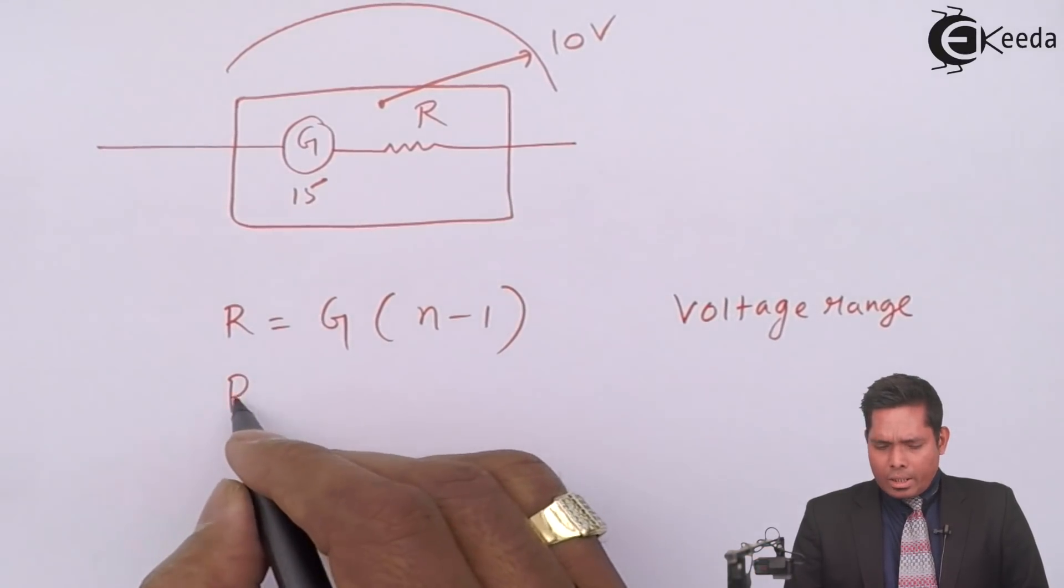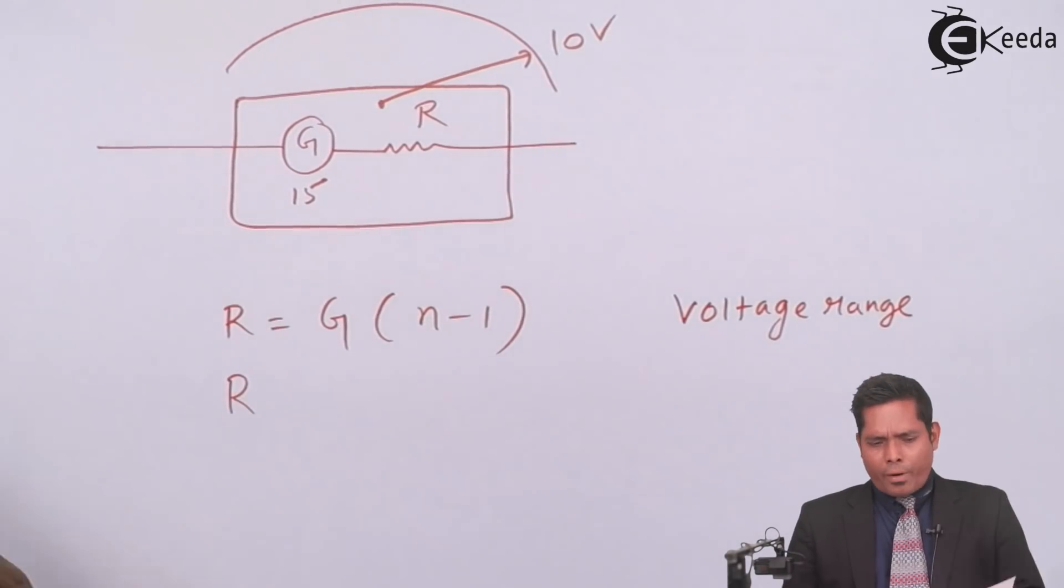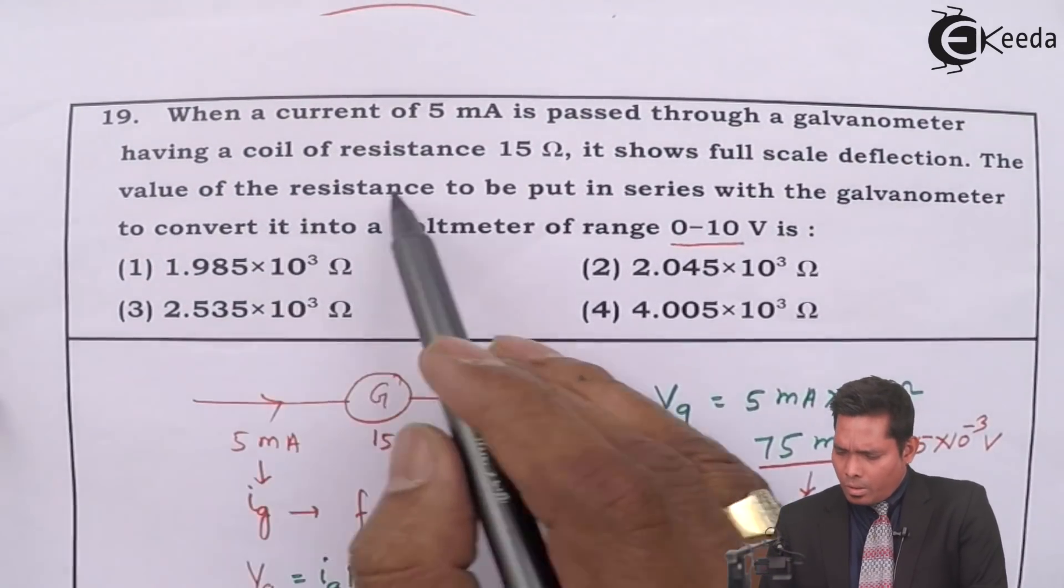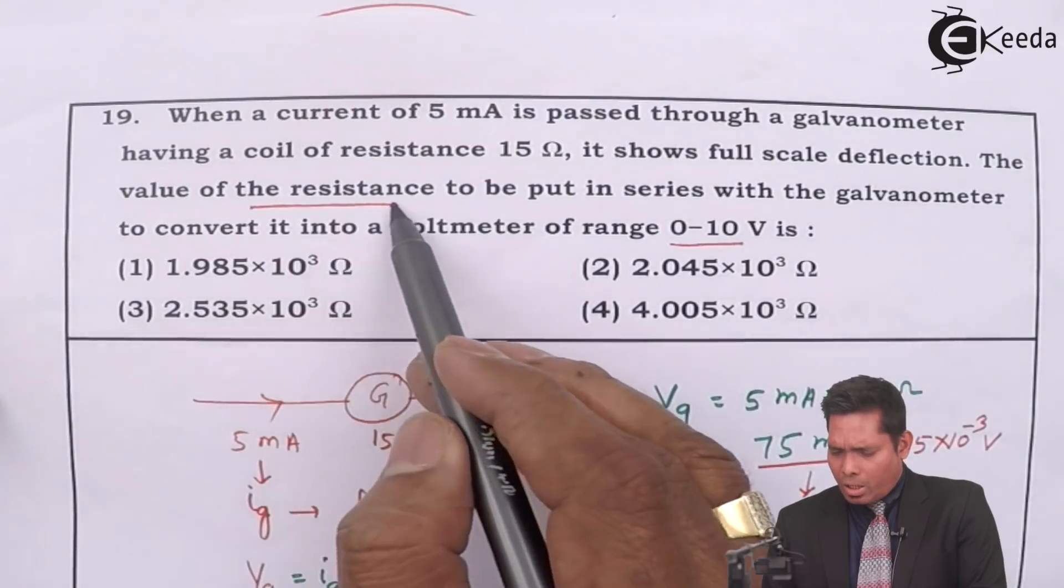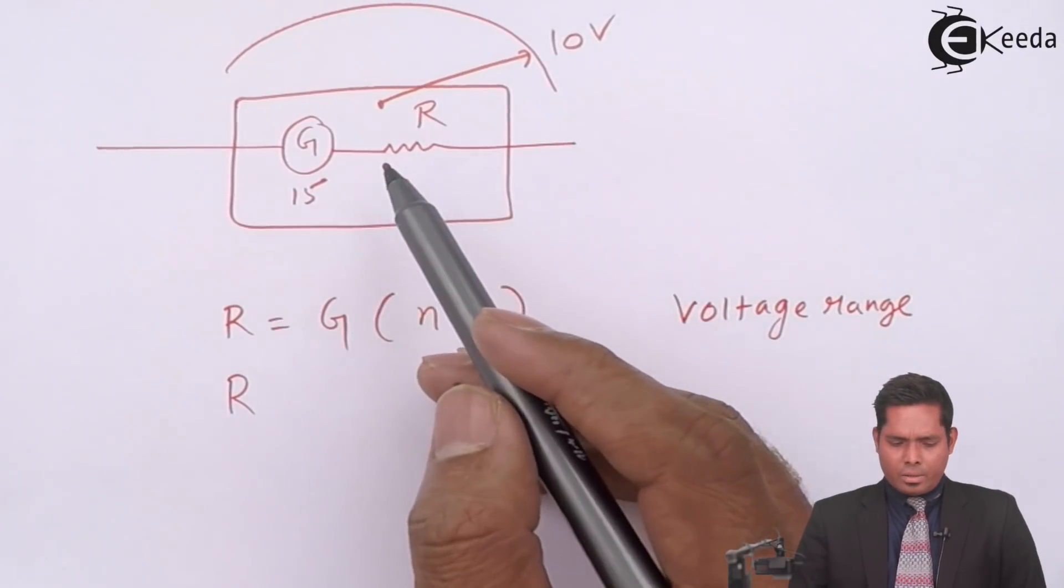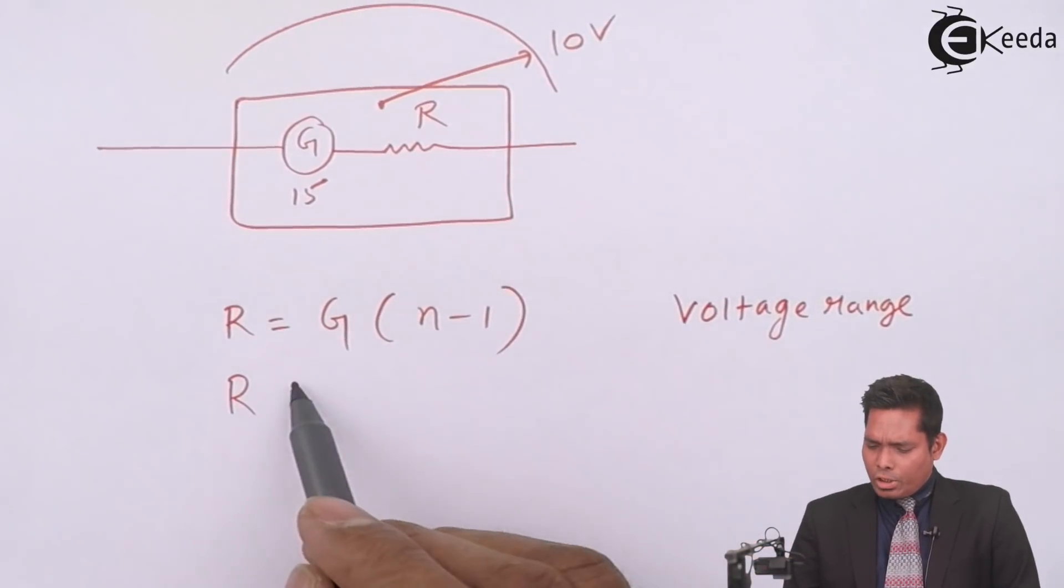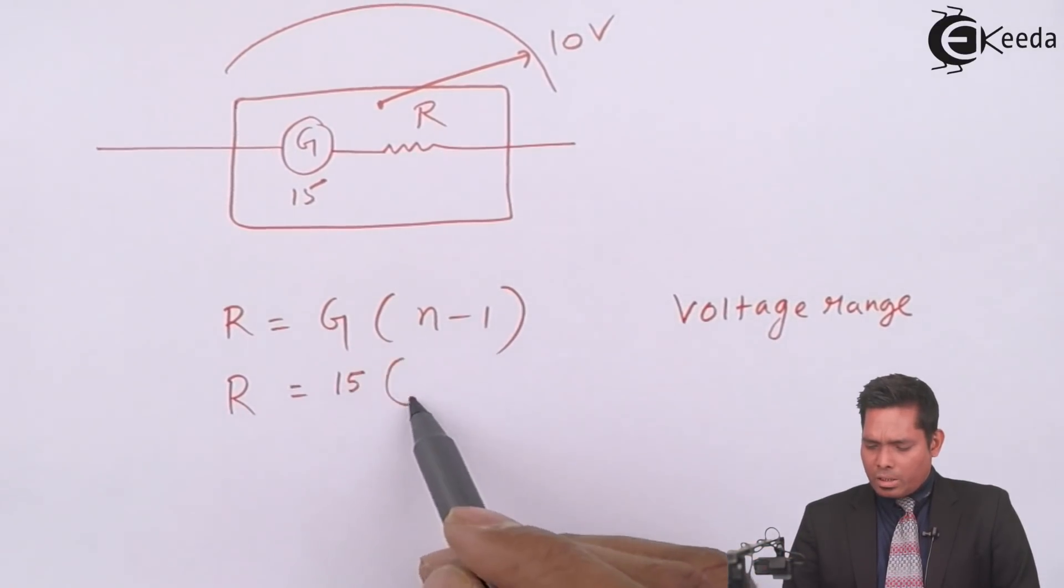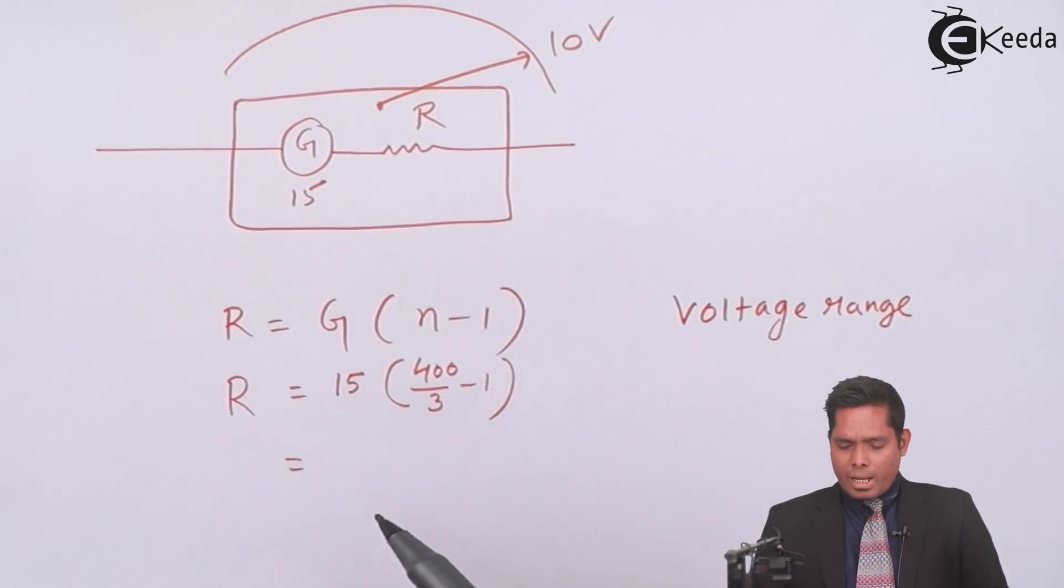Now our aim is to find the value of resistance, the R that is to be connected in series. I have connected this R. So R is G - that is galvanometer resistance is 15 - times N, which is 400 divided by 3 minus 1.